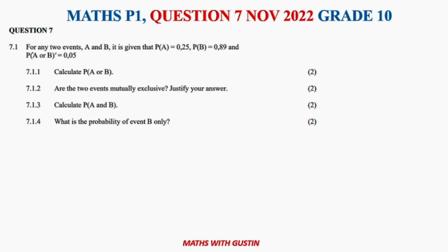For any two events A and B, we are given the probabilities — it's always nice when they give us those. We have the probability of A, the probability of B, and the probability of not getting A or B. Question 7.1.1 asks us to calculate the probability of A or B.